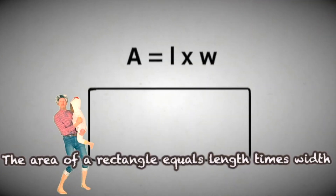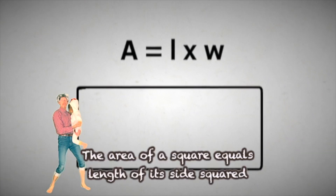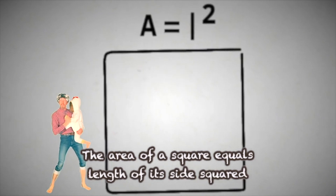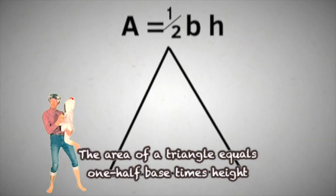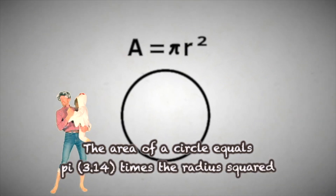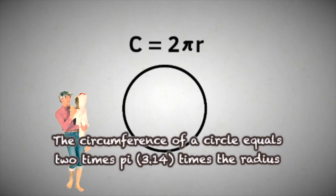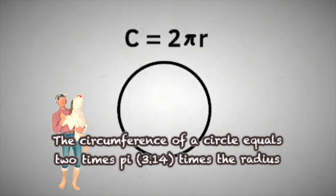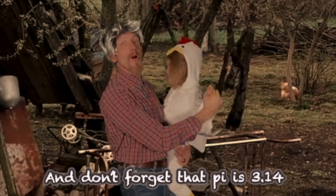The area of a rectangle equals length times width. The area of a square equals length of a side squared. The area of a triangle equals one half base times height. And the area of a circle equals pi times the radius squared. The circumference of a circle equals two times pi times the radius. And don't forget that pi is 3.14.